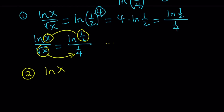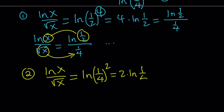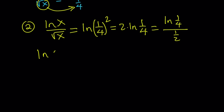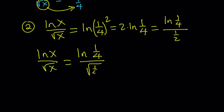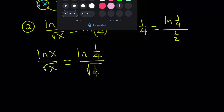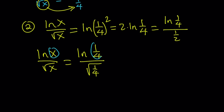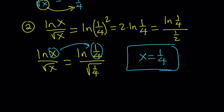So let's work with number 2. ln x over square root of x equals ln of 1 fourth squared, which can be written as 2 times ln 1 fourth, which can be written as ln 1 fourth over 1 half. So ln x over square root of x equals ln 1 fourth over 1 half, which you can write as square root of 1 fourth. This clearly shows that x must be 1 fourth — or at least x equals 1 fourth is a solution. Now we need to answer: is that the only solution?